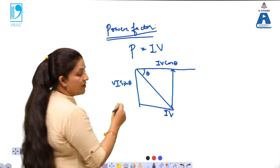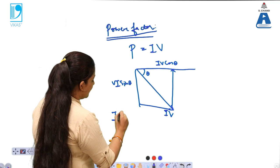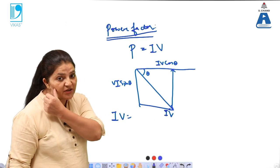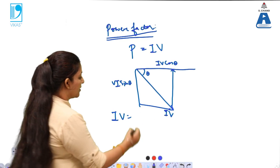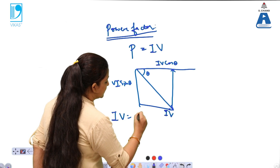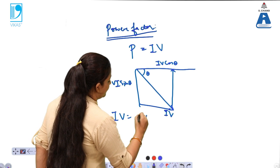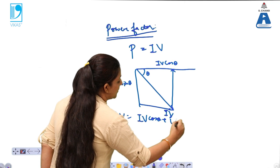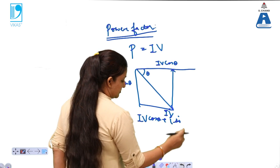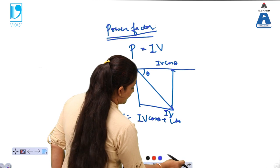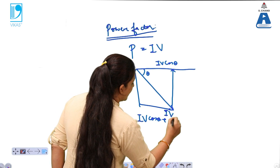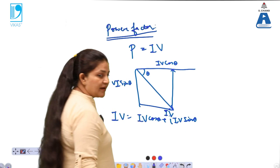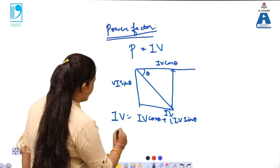So that is IV sin theta. Next we know that from Euler's rule any vector can be represented as the combination of real part and imaginary part. So that can be written as IV cos theta plus imaginary part, that is j IV sin theta, and the resultant will be calculated like this.